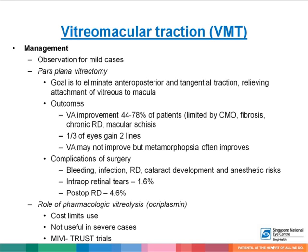Most VMTs are observed if they are mild. If patients are very symptomatic and require treatment, a pars plana vitrectomy is performed. The goal of surgery is to eliminate anterior-posterior and tangential traction, relieving attachment of the vitreous to the macula. Vision improvement is variable in about 44% to 78% of patients and is usually limited by CMO, fibrosis, chronic retinal detachment, or macular schisis. A third of eyes gain two lines of vision, and while vision may not improve, metamorphopsia often improves.